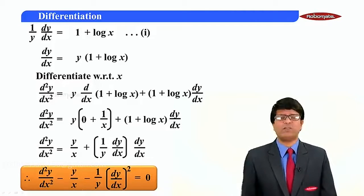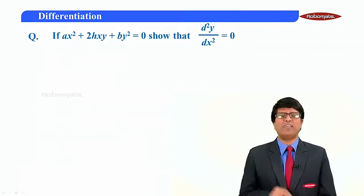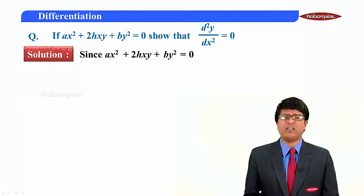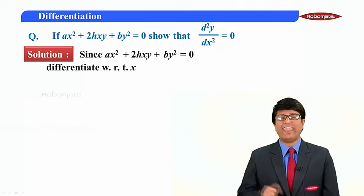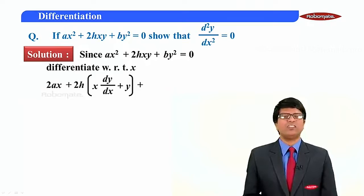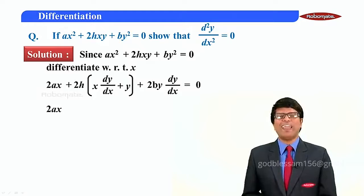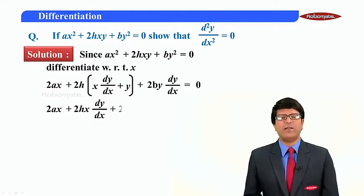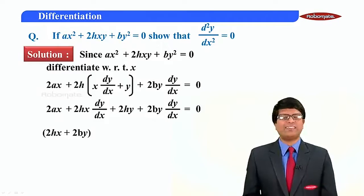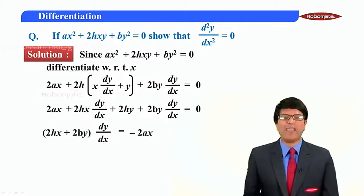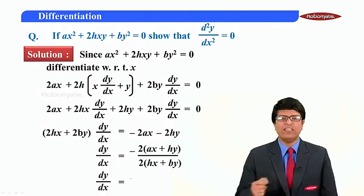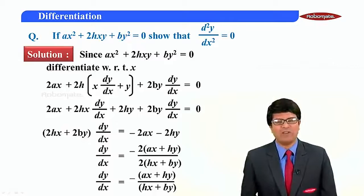Let us solve one more very important problem from an exam point of view, which says: if ax² + 2hxy + by² = 0, show that d²y/dx² = 0. Differentiating with respect to x: 2ax plus 2h·(x·dy/dx + y·1) plus 2by·(dy/dx) equals 0. Collecting dy/dx terms: dy/dx times (2hx + 2by) equals minus 2ax minus 2hy. Therefore dy/dx equals minus(ax + hy) upon (hx + by).